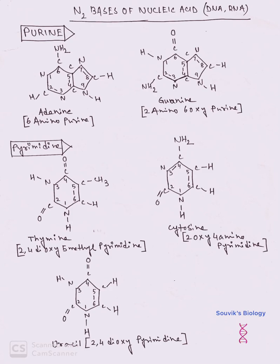The second purine is guanine. The chemical name is 2-amino 6-oxy purine, meaning the amino group is present at the second carbon position and oxygen is present at the sixth carbon position.